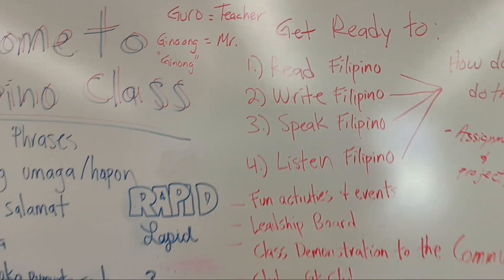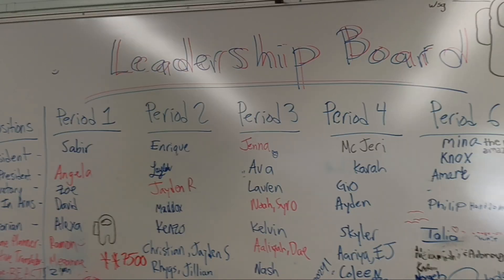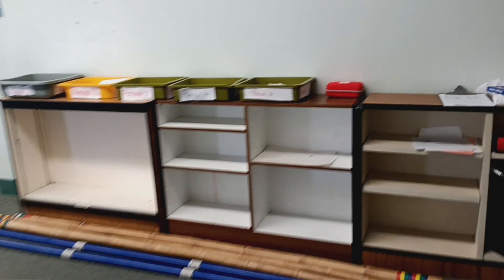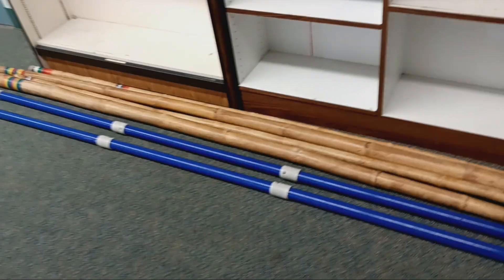And then we have a little notes on there — what were some of our goals, some of our phrases. I also set up a leadership board. I still need to decorate some of this. There are some cultural sticks for activities — that's Pabitin, one of our cultural games that we play.